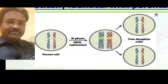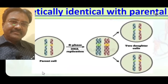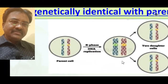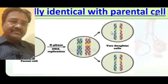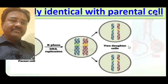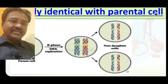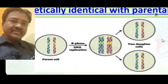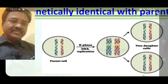Let us see a diagrammatic representation of what mitosis is. A parental cell contains chromosomes. In interphase, chromosomes are doubling. After doubling, the mitotic type of cell division occurs and two daughter cells are produced. Both daughter cells are genetically identical with each other, meaning the same number of chromosomes transfer from parent cell to their daughter cells. Both daughter cells are also genetically identical with the parental cell.